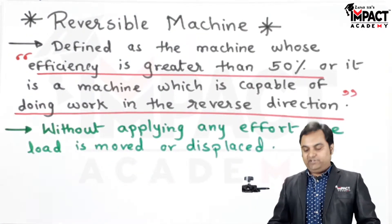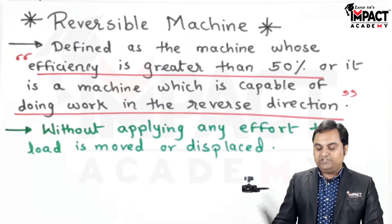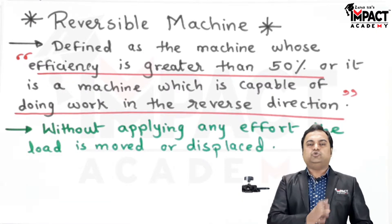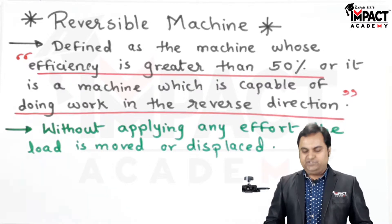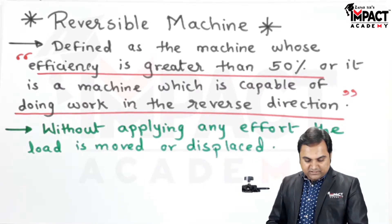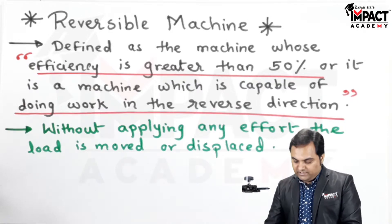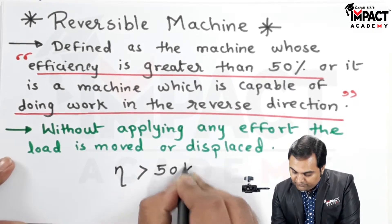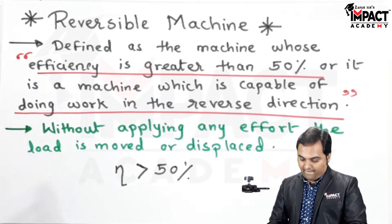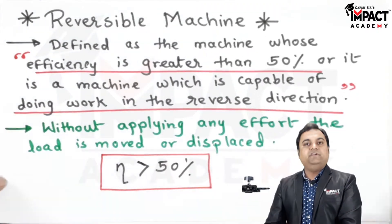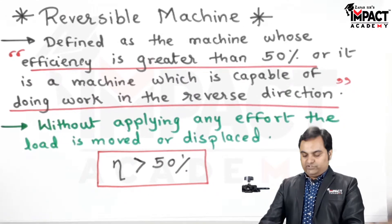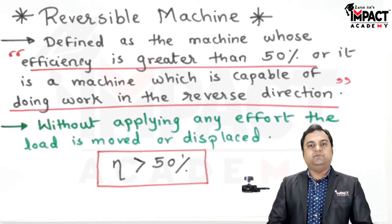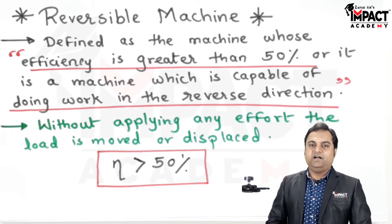Without the application of any effort the load is moved or displaced, and such conditions need to be avoided. Reversible machines can also be called overhauling machines, and the limiting condition is that for such machines the efficiency is greater than 50 percent. So when we are designing simple machines, we have to ensure that the efficiency value should not cross 50 percent, as that would lead to a reversible machine, which is not desired.